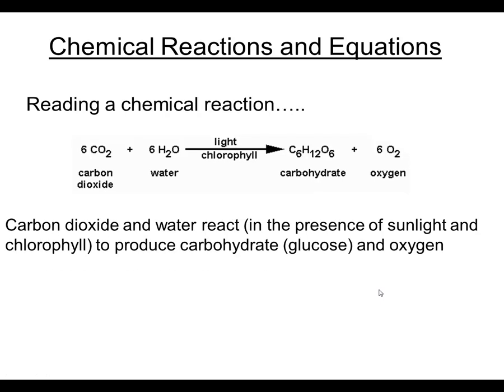Reading a chemical reaction is a little bit like translating it from symbols into words. You would read this reaction as carbon dioxide and water reacting in the presence of sunlight and chlorophyll to produce carbohydrate and oxygen. Light and chlorophyll are not directly involved in the chemical reaction—they're not reactants, but they are necessary for the reaction to occur, so we say 'in the presence of.' The materials on the left-hand side of the arrow are the reactants; the materials on the right-hand side are the products.